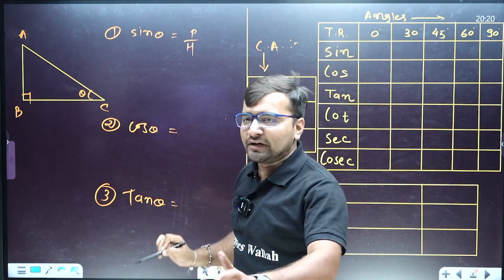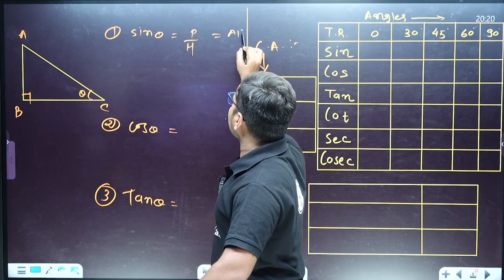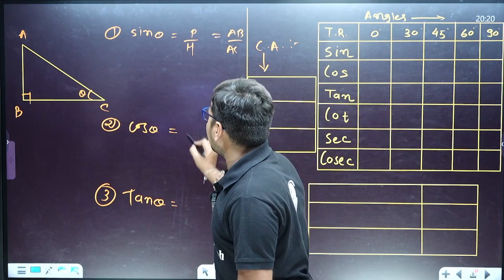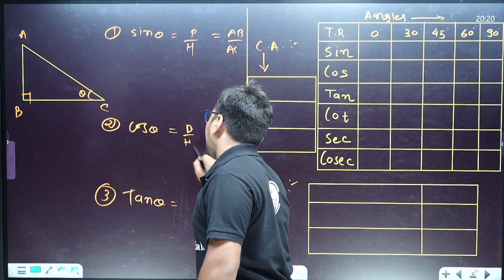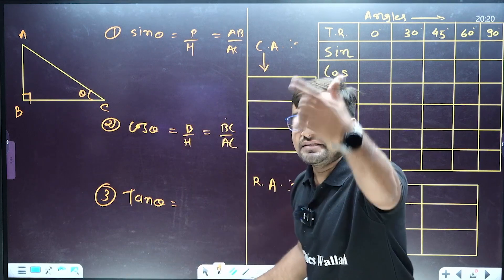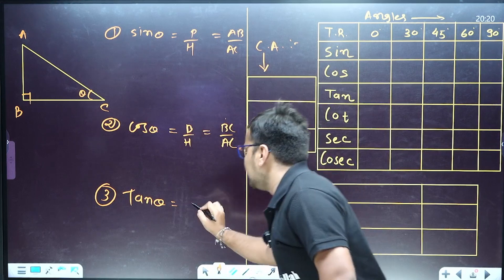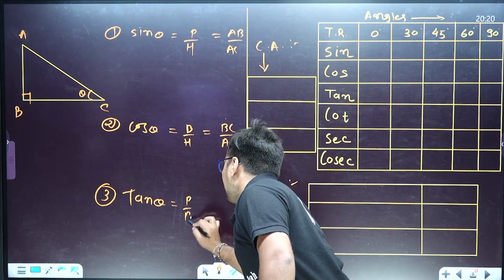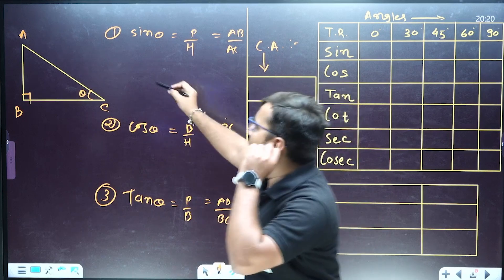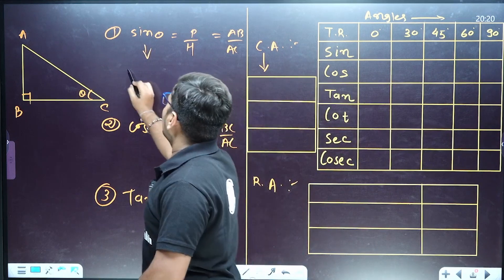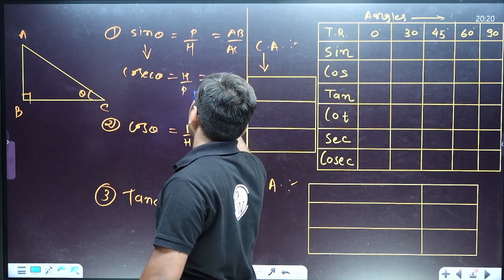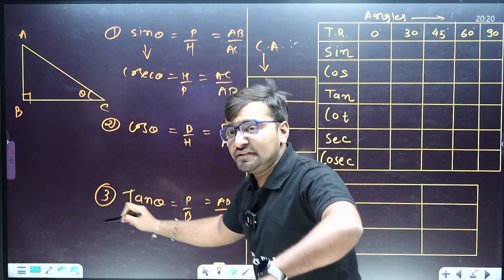Sin theta equals AB by AC. Similarly, cos theta is equal to base upon hypotenuse, which equals BC by AC. Tan theta is the ratio of sin theta by cos theta, which means perpendicular by base — that is AB upon BC. The reciprocal of sin theta is cosec theta, which equals hypotenuse upon perpendicular, that is AC by AB.